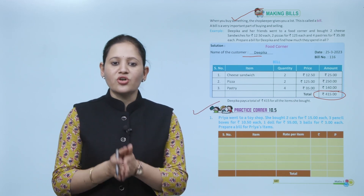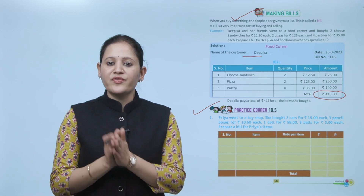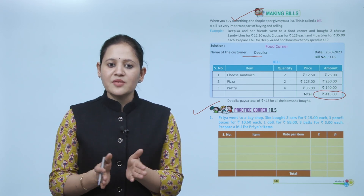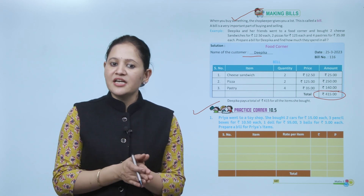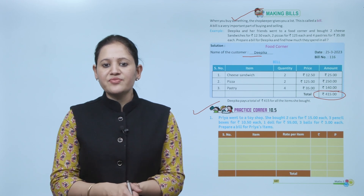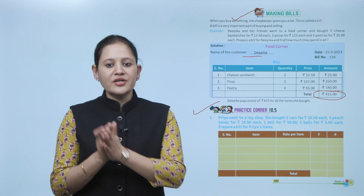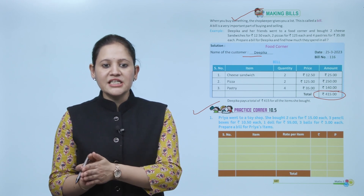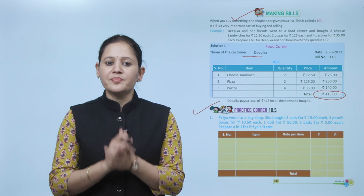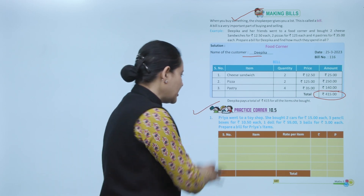Practice corner 10.5. Pre-eventure toy shop: she bought two cars for 15 rupees each, three pencil boxes for 10.50 each, one doll for rupees 55, three balls for rupees 3 each. Prepare the bill for the pre-eventure items.